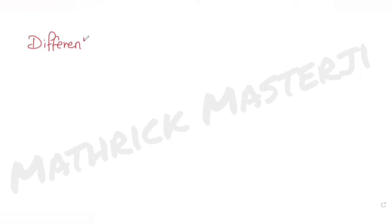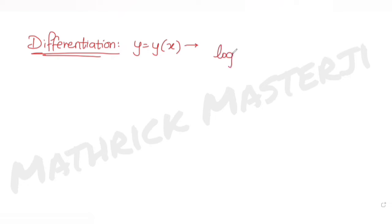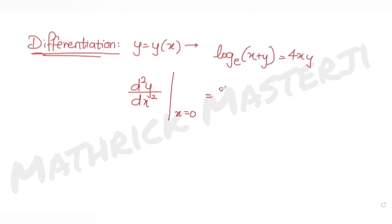Today's question is from the topic of differentiation. The question tells us that y = y(x) is an implicit function of x such that log(x + y) to the base e is equal to 4xy. We have been asked to figure out the value of d²y/dx², the second derivative, at x = 0.